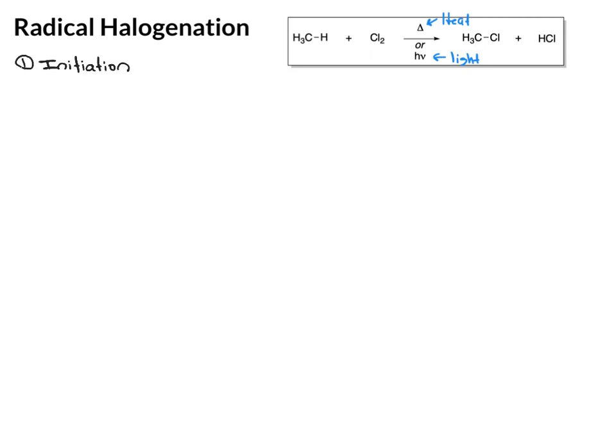In the initiation step, this is homolytic cleavage of the weakest bond in the system. If we look up here at our starting materials, we have CH bonds in methane and the ClCl bond in chlorine. Of those, the ClCl bond is much weaker. Halogen bonds are weaker than CH bonds. So when you put energy into this system, it's the Cl2 bond that is broken.